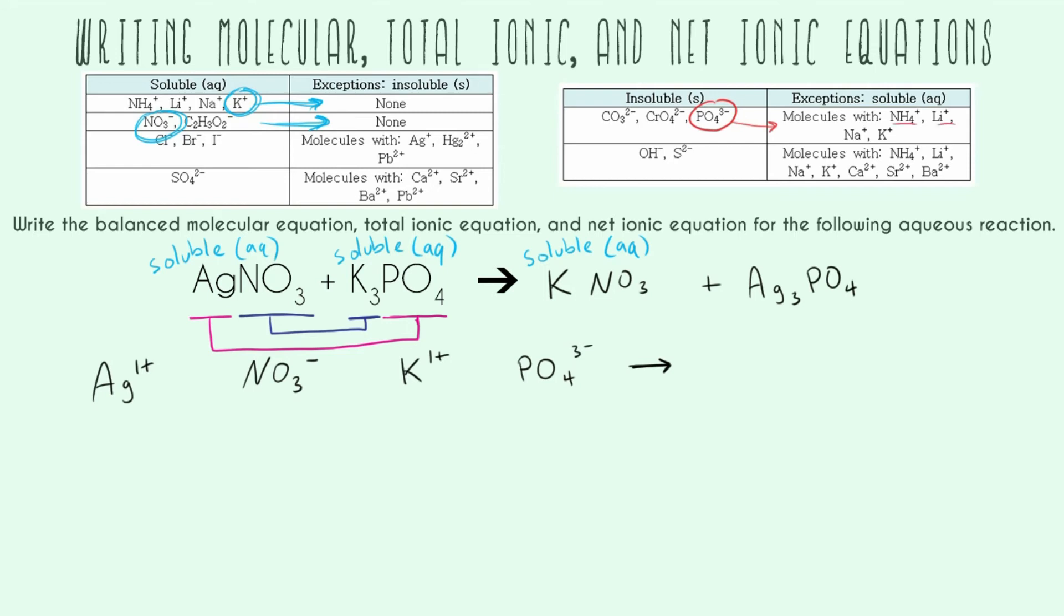Well, the exceptions don't include silver, so our compound here is still insoluble, which means we describe it as a little S inside parentheses for solid. It creates a precipitate - it's going to look like dust or solid in your reaction, not just a clear liquid anymore.